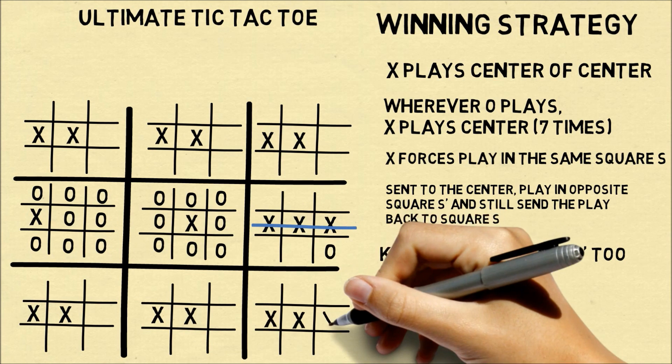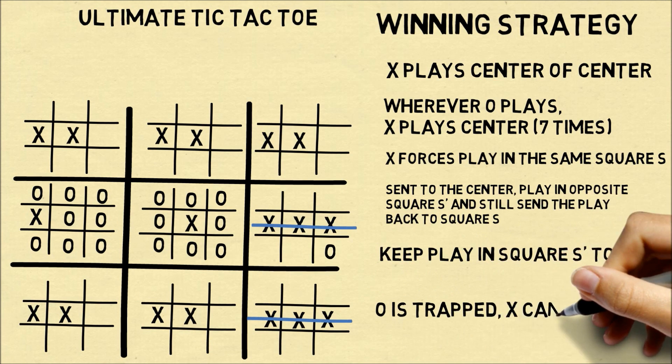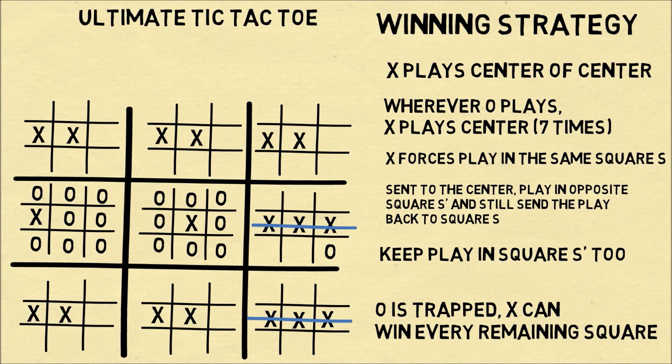At this point, O is trapped. Wherever O has to play, you can continue to win any of these squares and get 3 in a row.